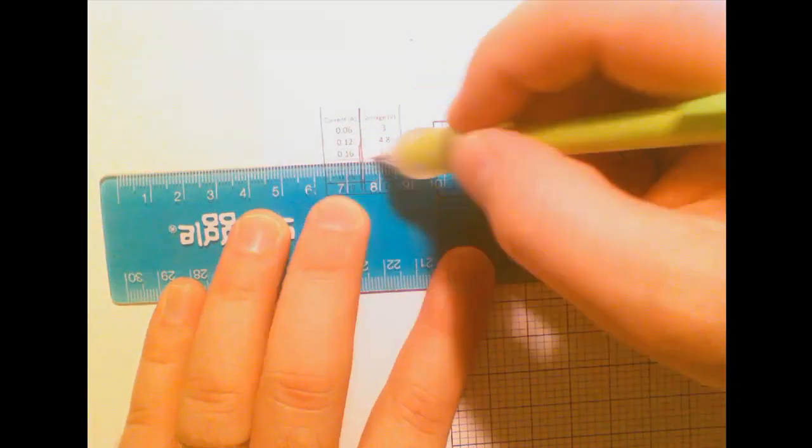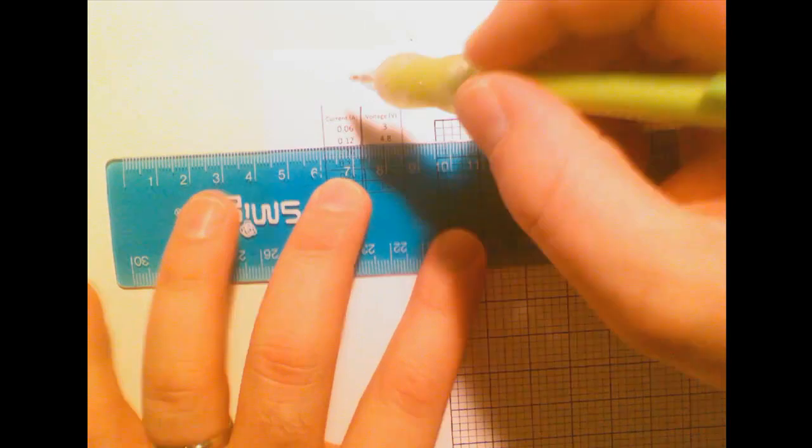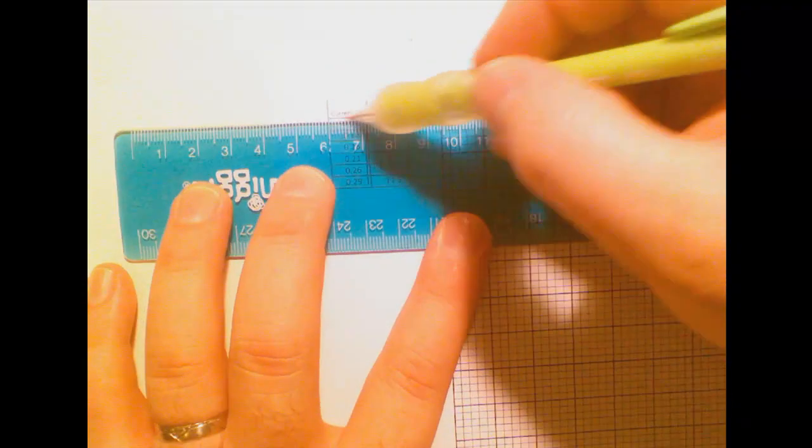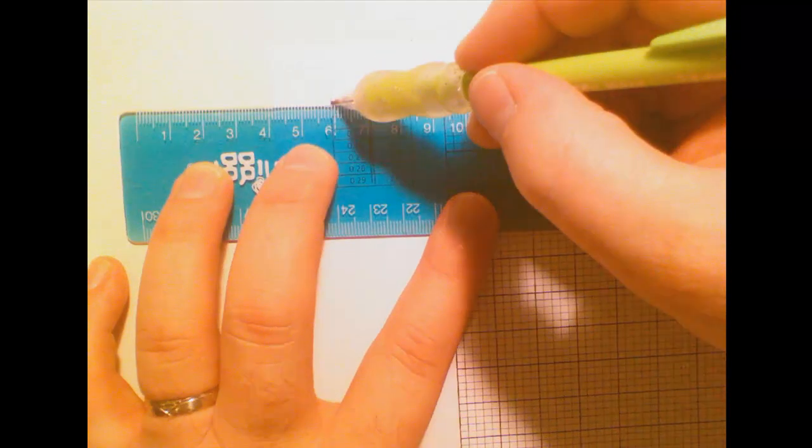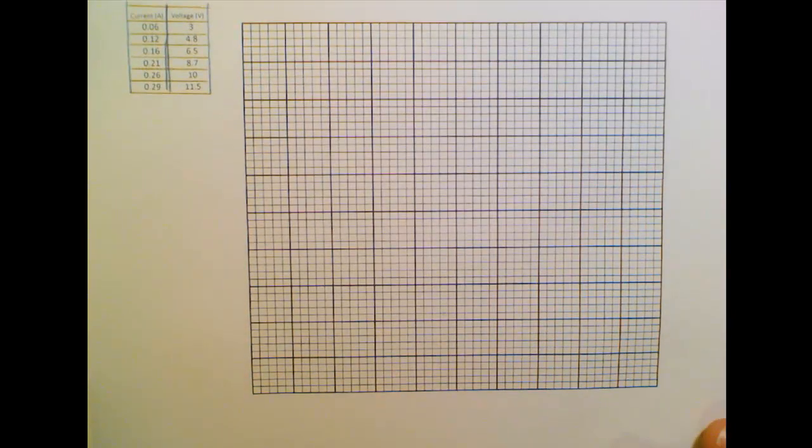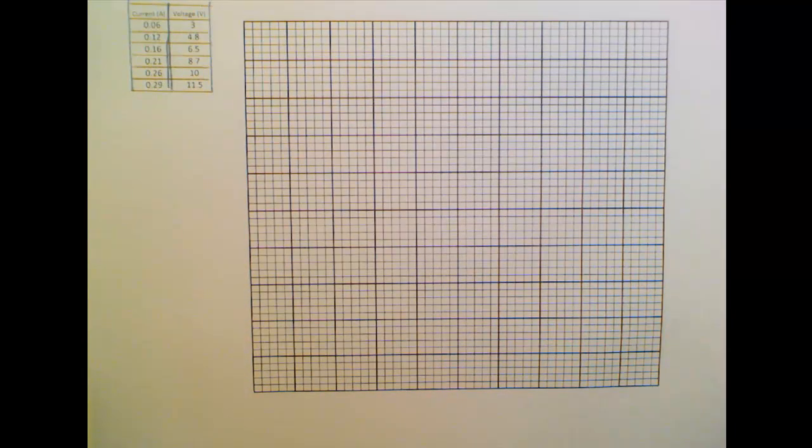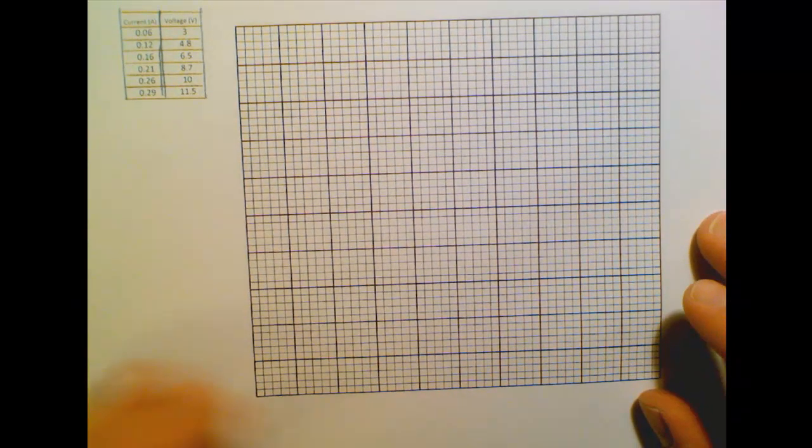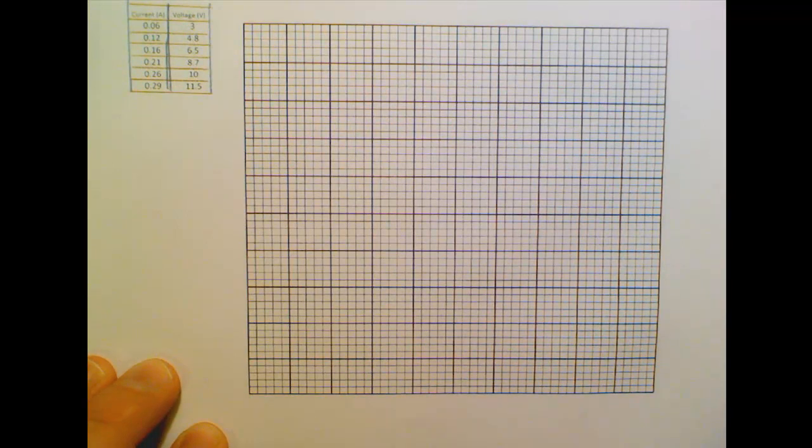This data has come from an electric circuit, and what I did was I changed the voltage and measured the current that went through the circuit. And so when I'm not given any instructions on how someone wants the graph plotted, then what I should do is I should put the independent variable on the x-axis and the dependent on the y.